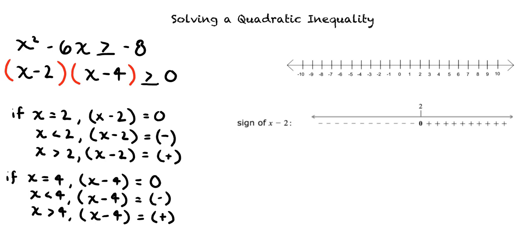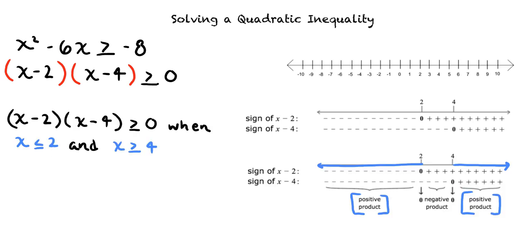Finally, to find the sign of (x - 2)(x - 4), we use the rules for the sign of a product. This results in (x - 2)(x - 4) ≥ 0 when x ≤ 2 and x ≥ 4. We can graph this like so.